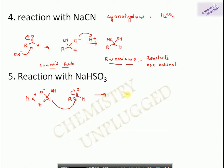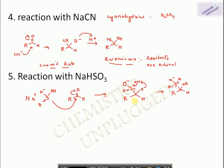In the bisulfite reaction, the lone pair on sulfur attacks the carbonyl carbon, forming a bisulfite addition compound. In the next step, since sulfur has a positive charge, the bond shifts and the O–H bond forms, with the negative charge on oxygen attacking hydrogen. We obtain the bisulfite addition product as the final compound.